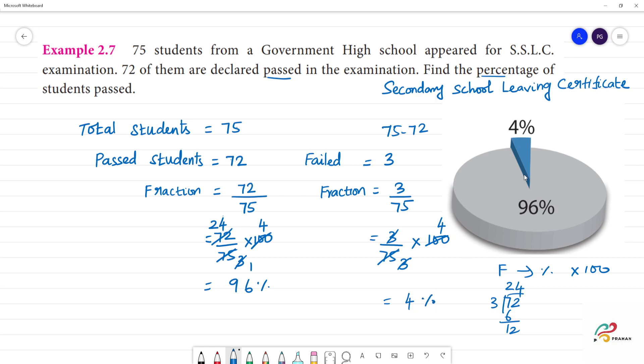So every percentage, 96 percentage of the students passed. This many percent passed, this many percent failed.